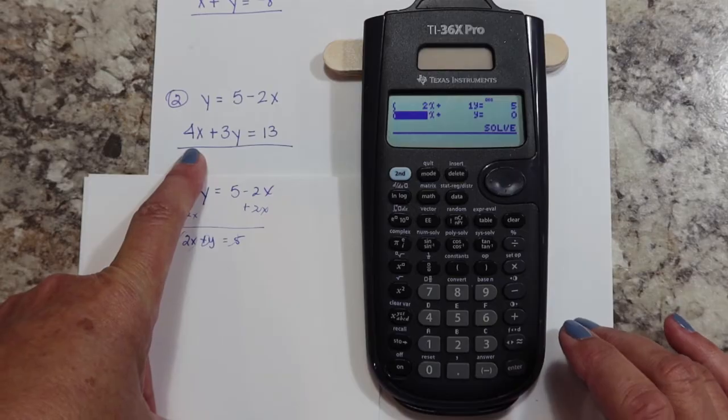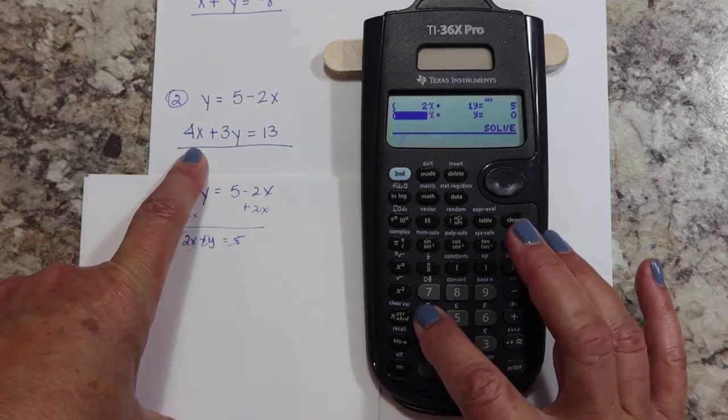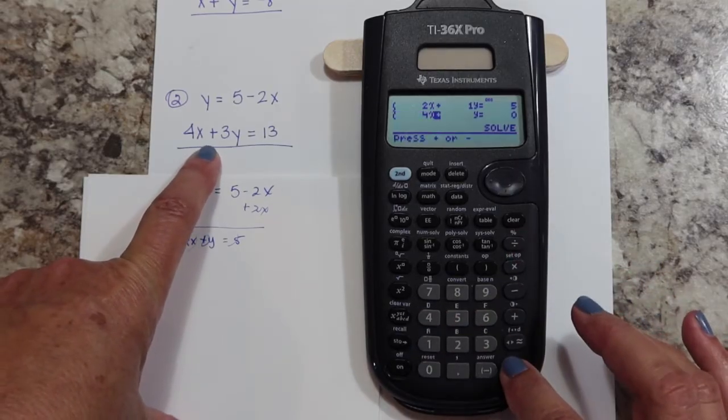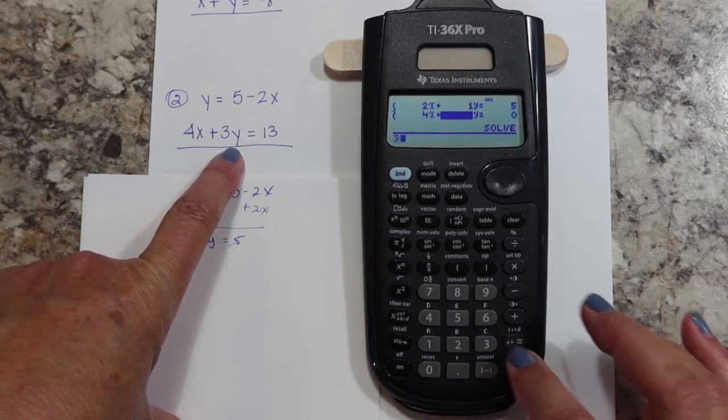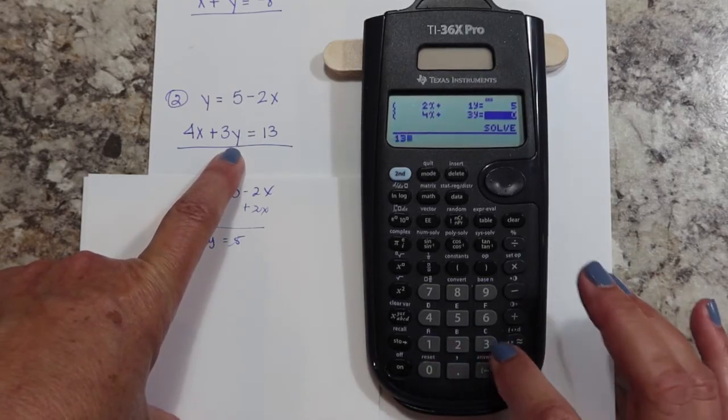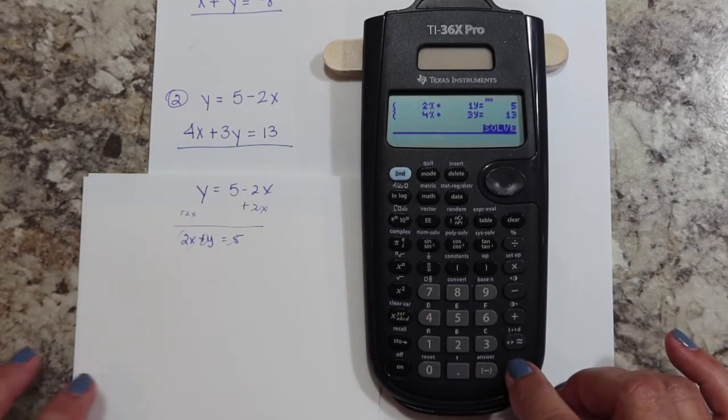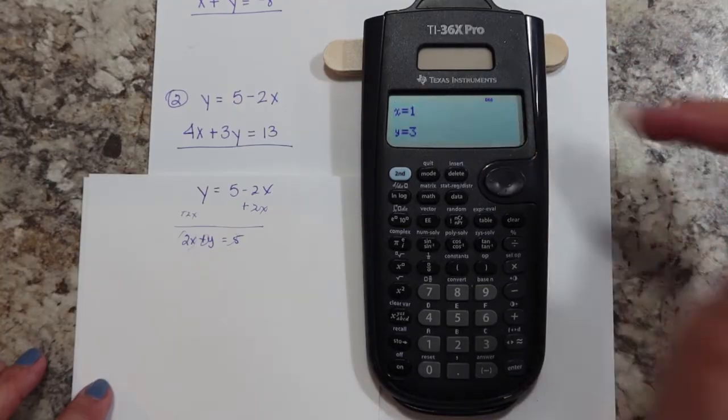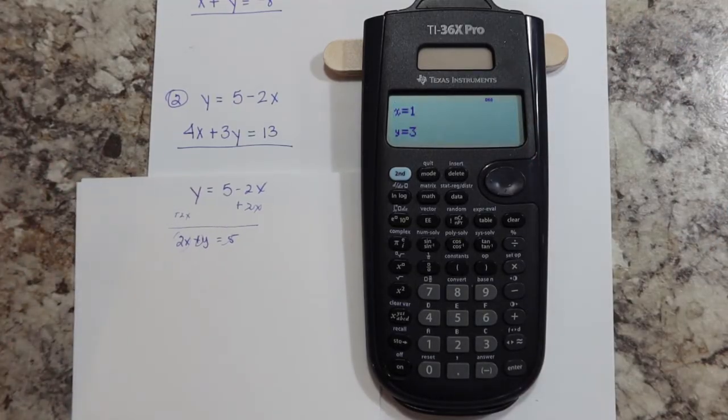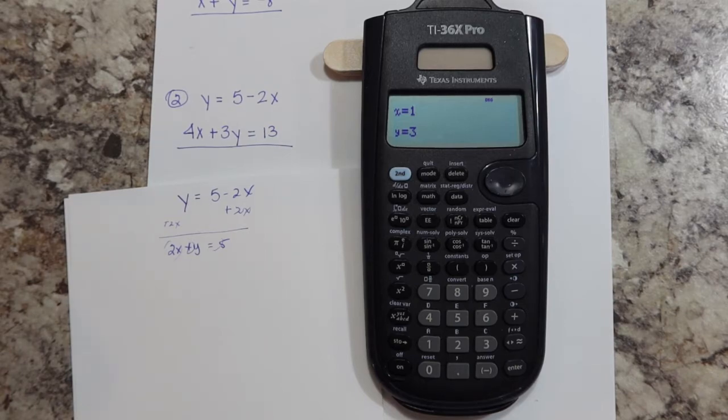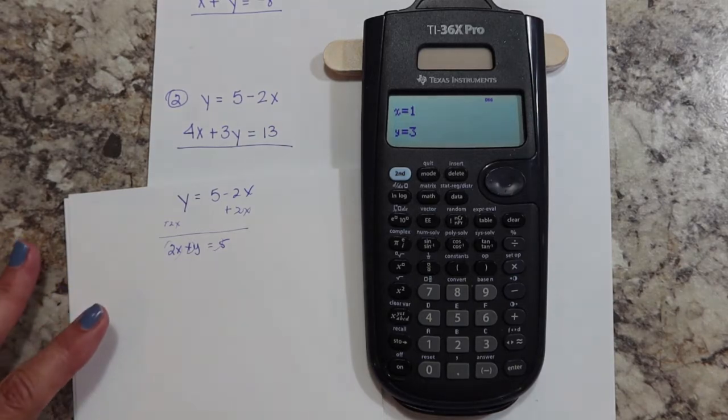Enter, over here to my constant I have five. The bottom equation is already in standard form, so I'm good to go. I'm going to hit four, the plus is default. I'm going to hit three, enter, thirteen. And it says 'solve,' so I'm going to hit enter, and there's your answers: one and three. Yes, I did have to do a little manipulation, but it was still very fast.